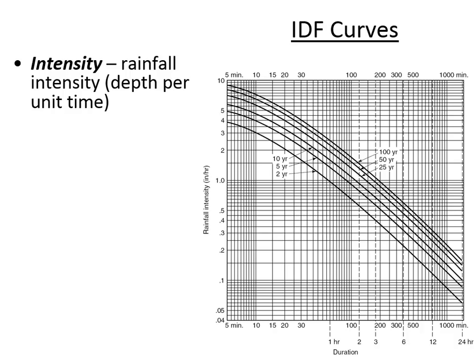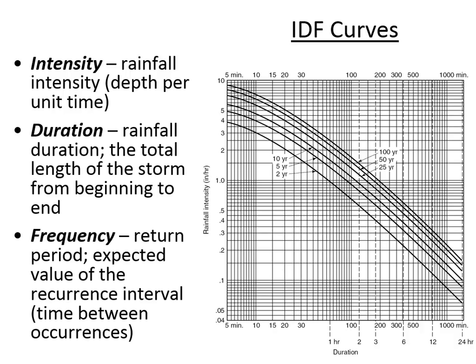An IDF curve — or sometimes called a DDF curve — can be expressed in terms of intensity or depth. When it's IDF, that means intensity, duration, frequency. In the other way of looking at it, it's depth, duration, frequency, and the y-axis would show rainfall depth instead of rainfall intensity.